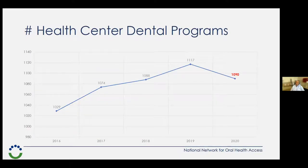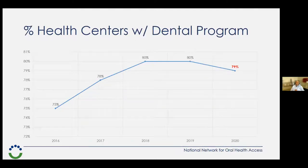Looking at the graph starting from 2006, you can see it's been almost a steady climb each year in the increasing number of health center dental programs. But as we get to the peak of 2019, suddenly there's a drop. We go from 1,117 dental programs down to a little over 1,090. As for the percentage of health centers with dental programs, 2018 and 2019 were balanced at 80%, but we've lost ground in 2020, moving down to 79%.